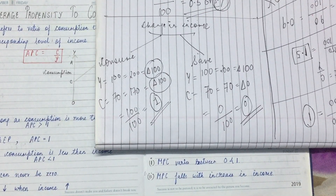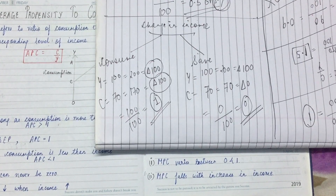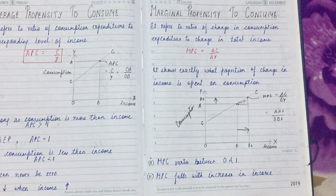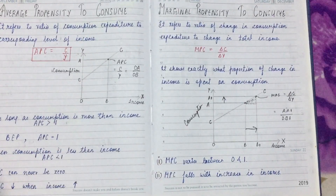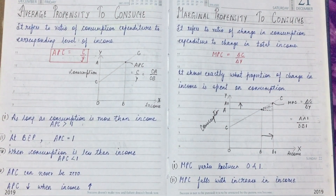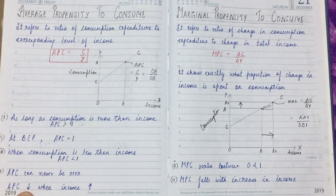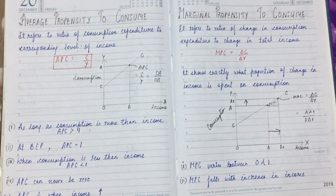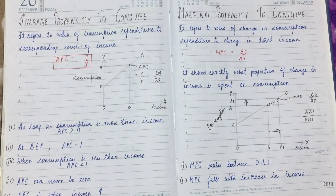Last property: MPC falls with increase in income. Your Marginal Propensity to Consume decreases as your income rises — the same point we saw in APC. As income keeps rising, we start to control our consumption slightly, feeling that we've already bought everything we need. This was all about APC and MPC. I hope you all understood. For any queries, please use the comment box. Thank you so much for watching — please share, like, and subscribe.